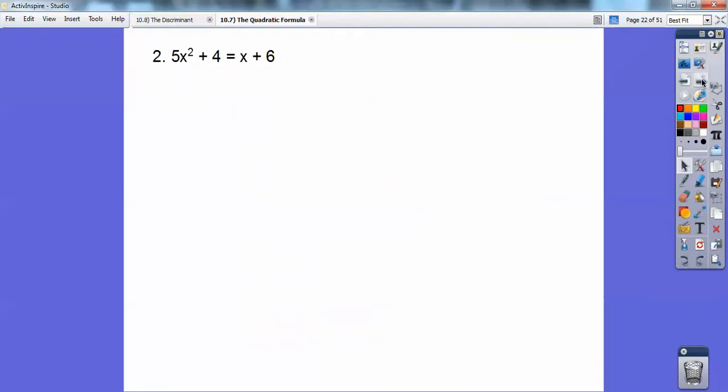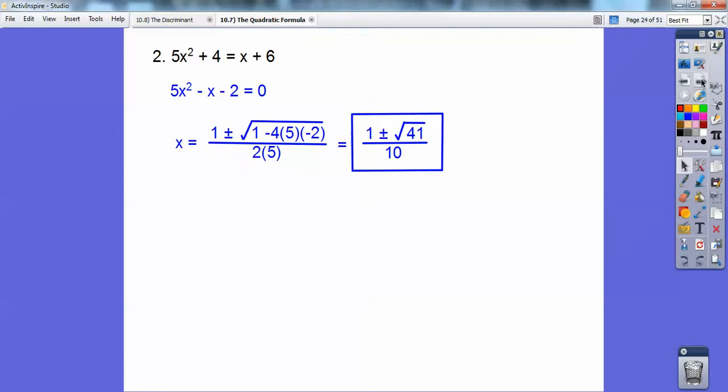All right, let's try it with this one. Again, we've got to make it equal to 0. So I'm going to subtract x and subtract 6 from this 4, so it's going to be a minus 2 right there. All right, so there we go, and then I'm going to use the quadratic formula, and when, if you do it right, you get 1 plus or minus root 41 all over 10. Isn't that a beauty?